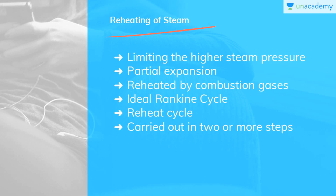Let's move on to reheating of steam. Reheating of steam is limiting the higher steam pressure in order to limit the quality to 0.88 of the turbine exhaust. All the steam after partial expansion in the turbine is brought back to the boiler, reheated by the combustion gases, and then fed back to the turbine for further expansion. In this reheat cycle, the expansion of steam from initial state 1 to the condenser pressure is carried out in 2 or more steps depending on the number of reheaters used.